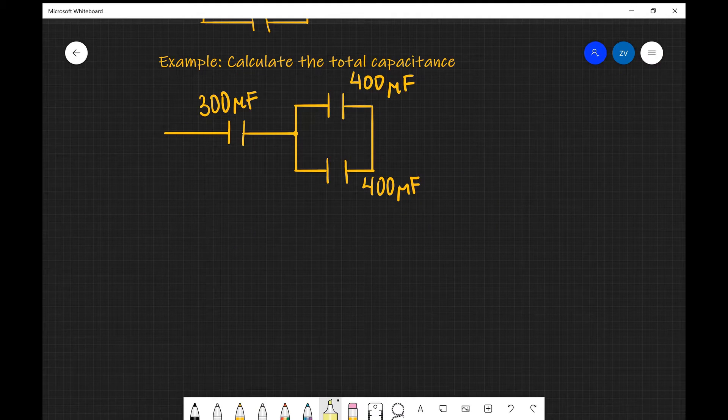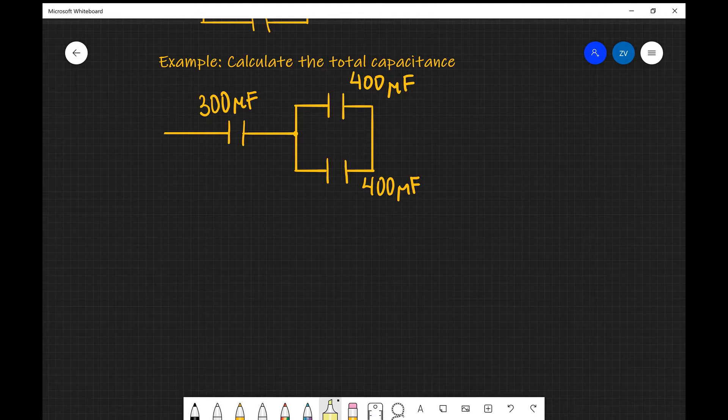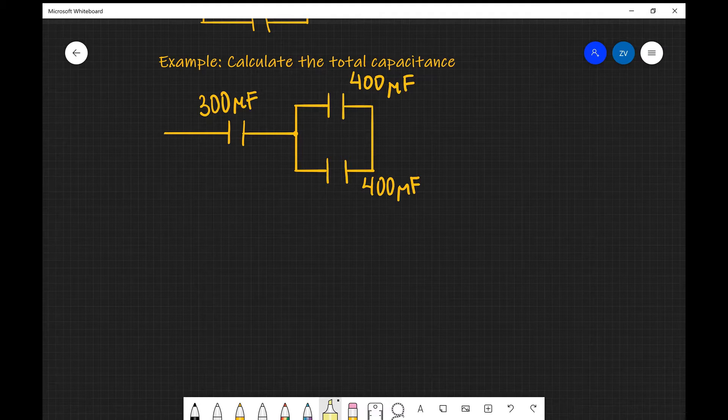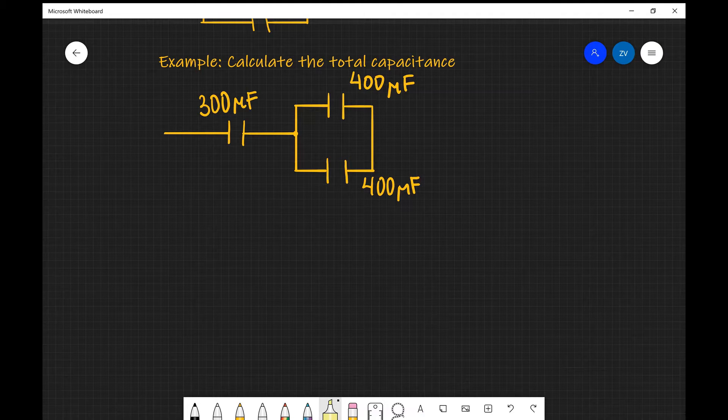So let's apply what we've just learned to an example. So we have the following circuit. We have a 300 microfarad capacitor which is connected to two 400 microfarad capacitors which are connected in parallel. What we need to do is calculate the total capacitance.